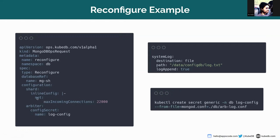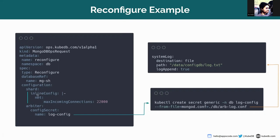This is the configuration we want to set to the shard pods. You can see there are two ways to actually set the configuration. The first way is using a config secret where all the configurations are written in a secret file directly. The second way is where you can set the configuration as inline config directly. So let's see what is happening in the background.